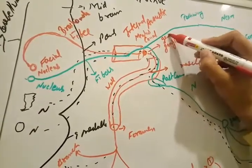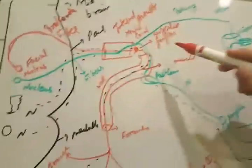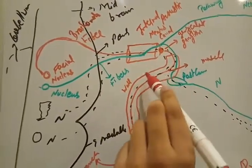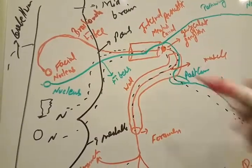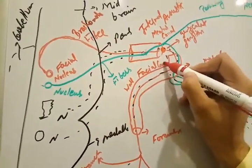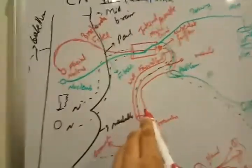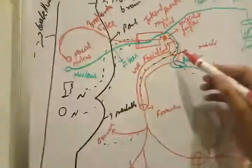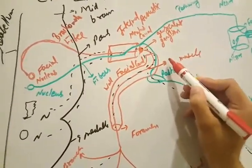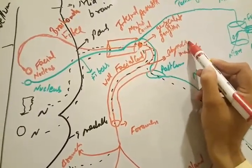Inside the internal acoustic meatus canal there is a ganglion — the geniculate ganglion. After the geniculate ganglion, the nerve further passes through the middle wall of the middle ear. This is known as the facial canal. So remember this pathway: from the facial nucleus, through the facial canal.